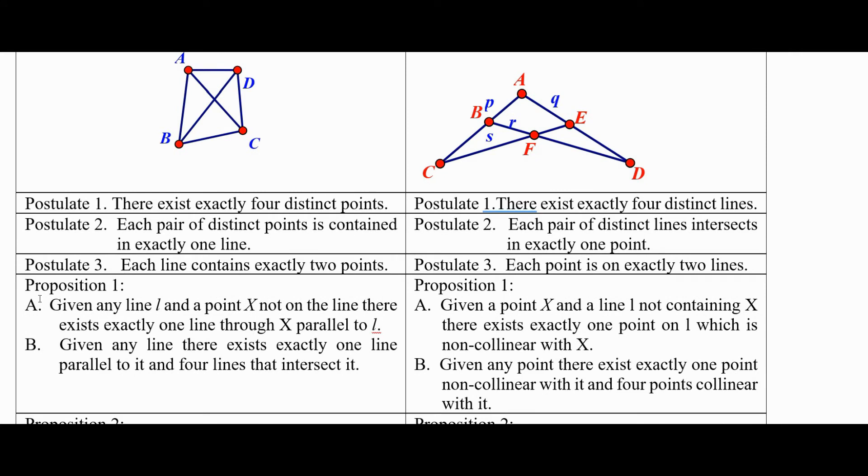We had some propositions. Proposition one over here was given any line and a point not on the line, there exists exactly one line through X parallel to line L. So, for example, if we have A and B and then a point C not on the line, there's exactly one line parallel there.